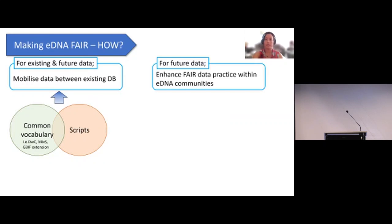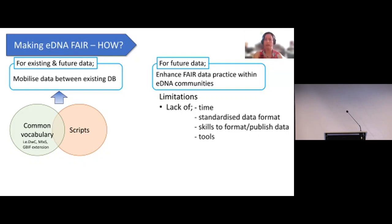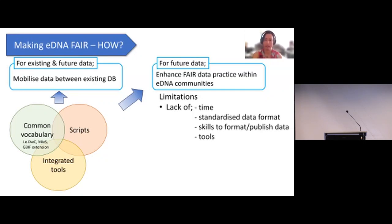Another big challenge is encouraging eDNA researchers to share their data in a FAIR manner. Currently many researchers make data available, but many still don't. Why is that? With Tobias from GBIF, we recently ran a survey with DNA practitioners and data scientists in Australia and New Zealand and identified a number of bottlenecks. Number one was lack of time, and also lack of skills to format and publish data, and lack of tools. Most of these can be addressed by setting up a common vocabulary and developing scripts. Integrated publishing tools — like those Tobias and Thomas are developing at GBIF — would also be very useful, requiring as little time as possible from researchers.